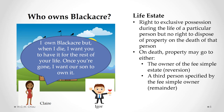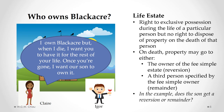With a life estate, on the death of the particular person, the property may go either to the owner of the fee simple estate — which is called a reversion, meaning the property reverts back to the original fee simple owner — or to a third person specified by the fee simple estate owner, which is called a remainder. In the example with Claire and Igor, the son gets a remainder interest, since he is a third person specified by Claire, who is the owner of the fee simple.